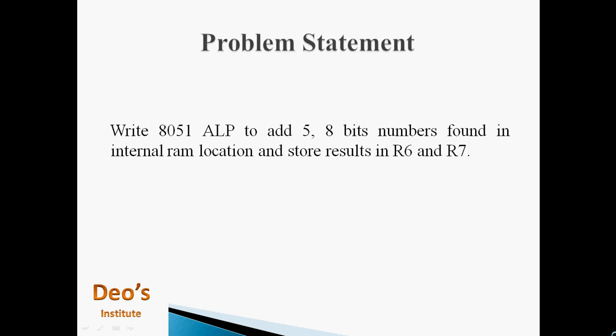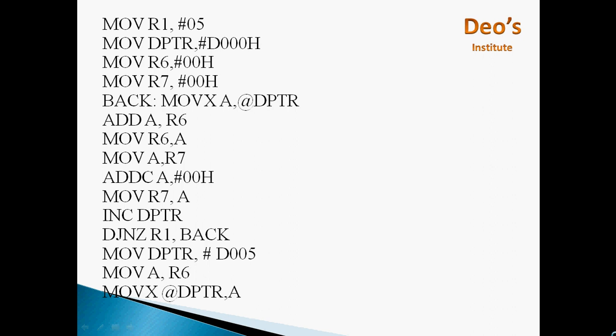Problem Statement: Write an 8051 assembly language program to add 5 8-bit numbers stored in internal RAM locations and store the result in R6 and R7 registers. The 8051 is an 8-bit microcontroller, meaning every memory location stores 8-bit data and memory location addresses are 16-bit. This is the program for adding 5 8-bit numbers using the 8051 microcontroller.